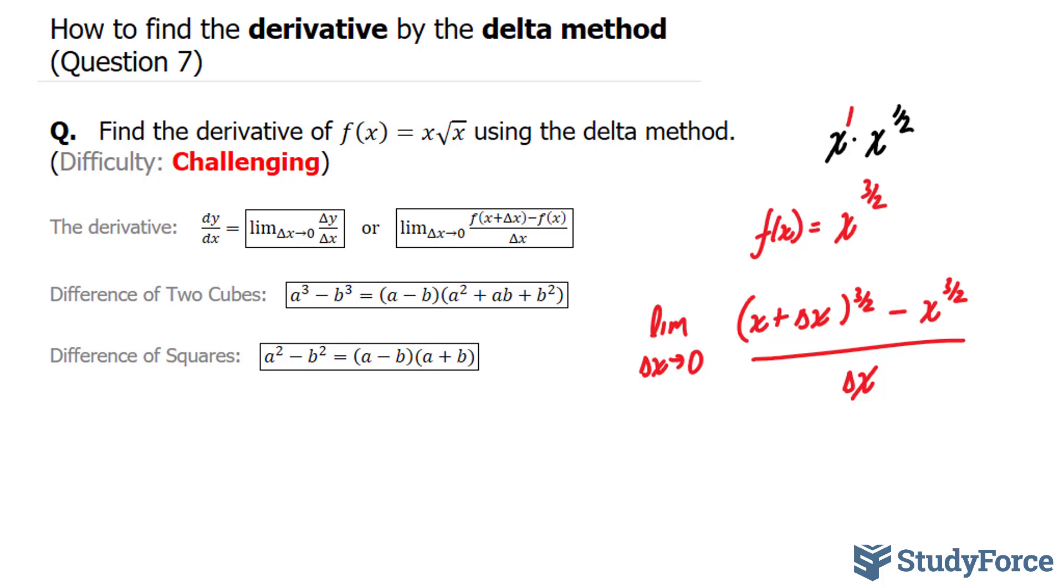Now if you apply the limit at this stage, you'll end up with an error, because you're placing zero into the denominator. What we have to do is algebraically manipulate this so that we don't run into this issue once we take the limit.